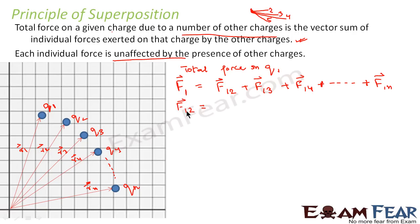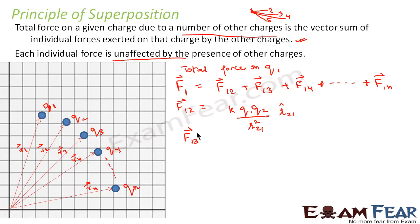Now let us calculate each of these values. F12, that is the force on 1 due to 2, using Coulomb's law is: K·Q1·Q2 divided by R21² multiplied by the unit vector R̂21. Similarly, F13 is equal to K·Q1·Q3 divided by R31² multiplied by the unit vector R̂31.